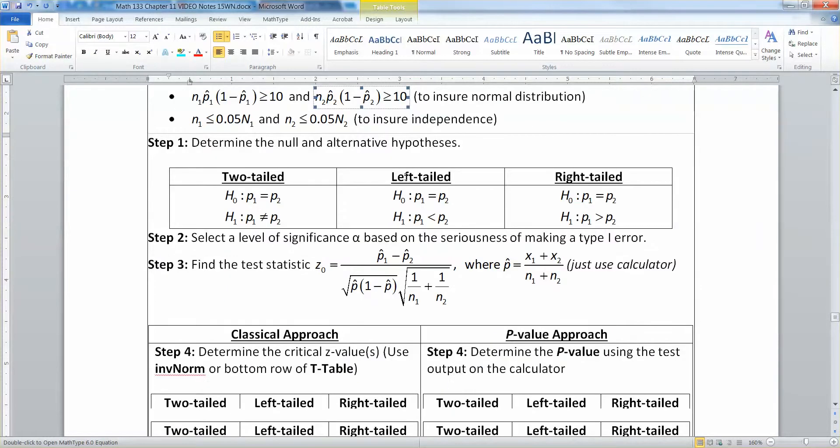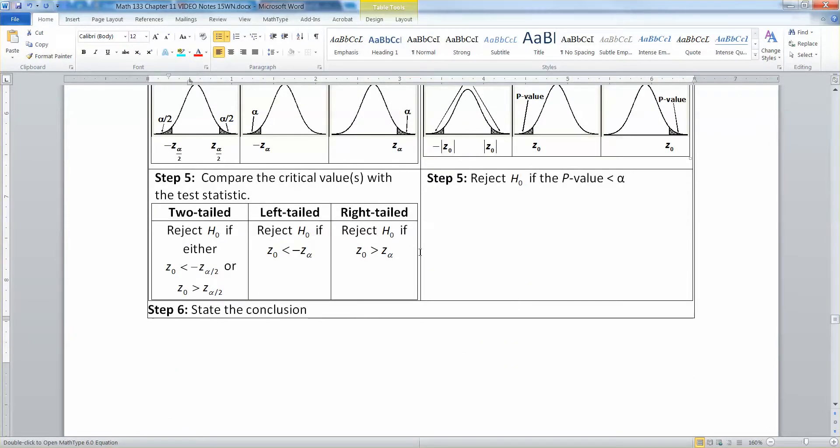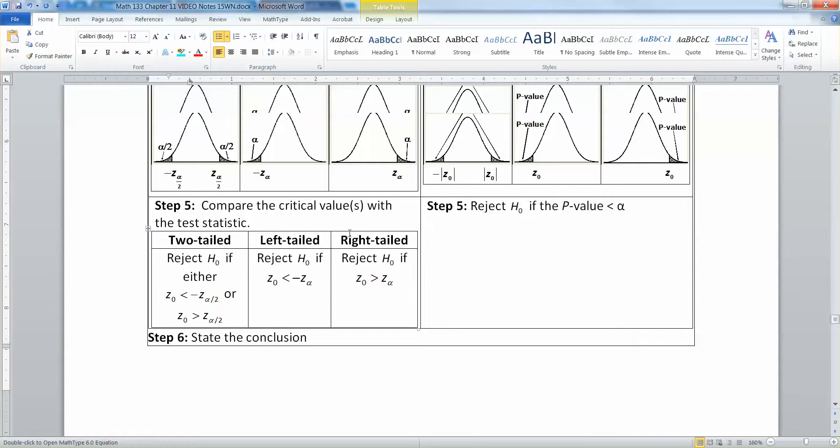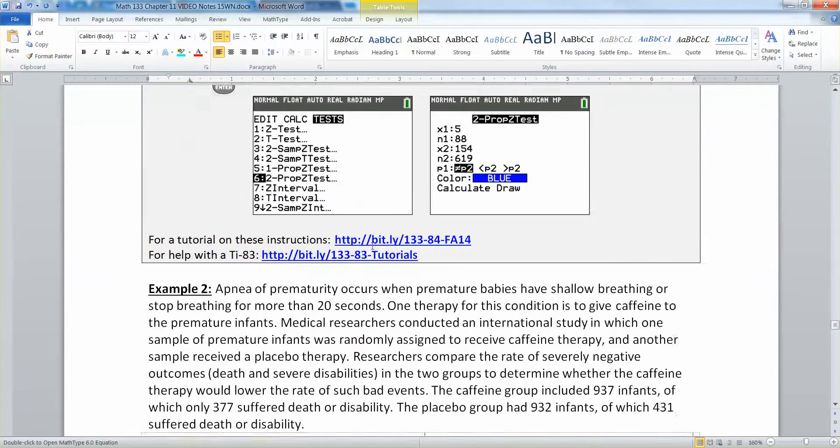Other than that, you have the similar six steps approach that we've seen many times over. This is a Z distribution again because this is for proportions, and we will see how it works in practice for an example.